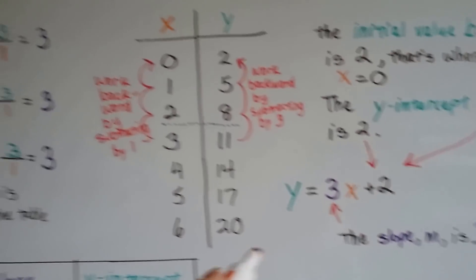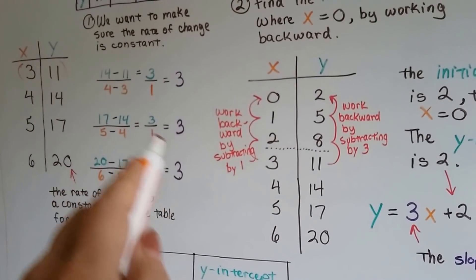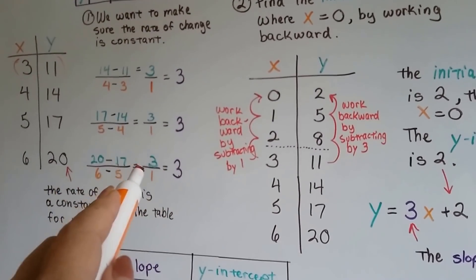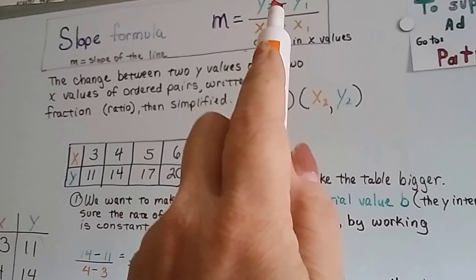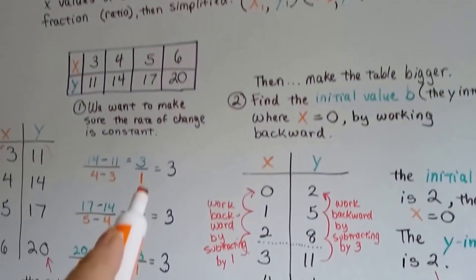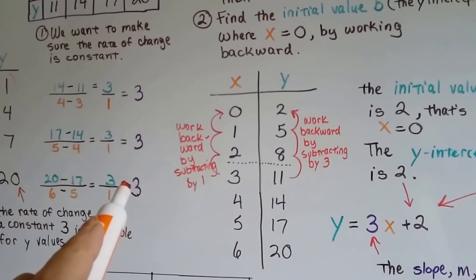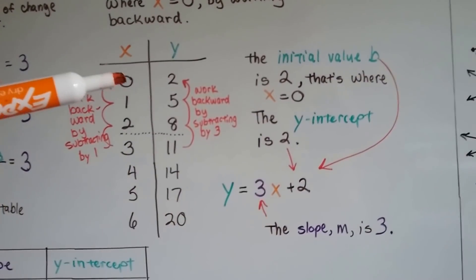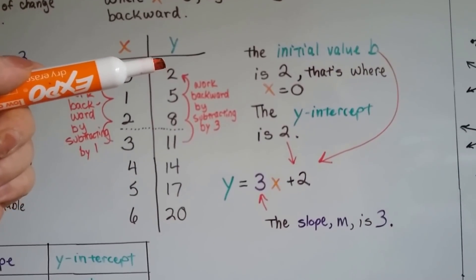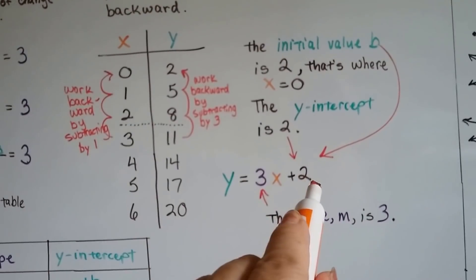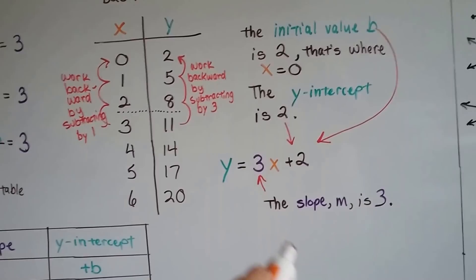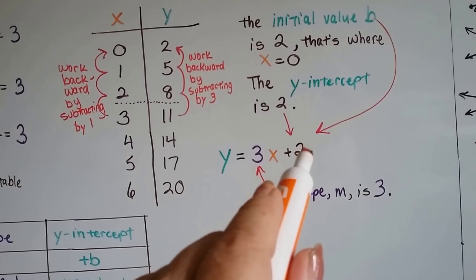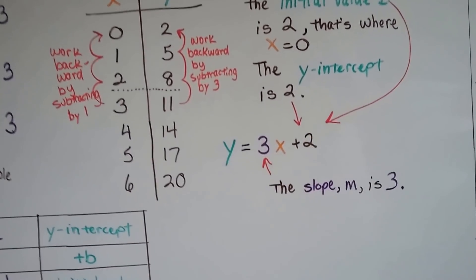So now, because we know our slope is 3 from doing the slope formula, the change in y values over change in x values, we got a slope of 3. So we can put that where the m was, and wherever the x is 0 is the y-intercept. That's a 2. We can put that for the plus b. So the slope is 3 and the initial value or y-intercept is a 2.